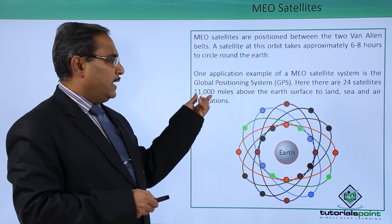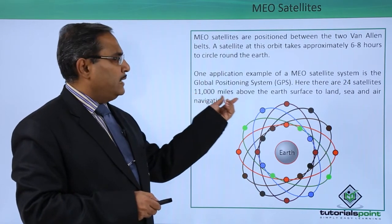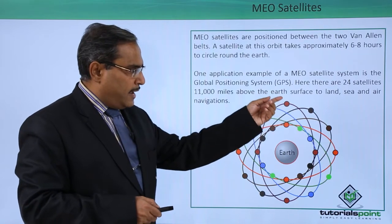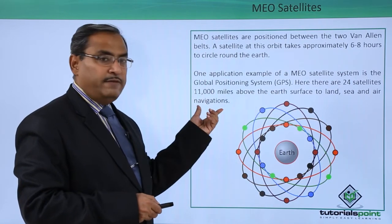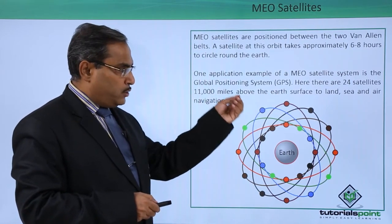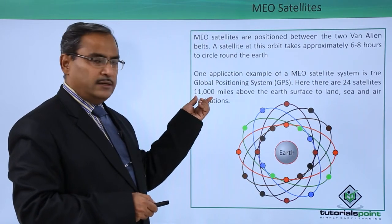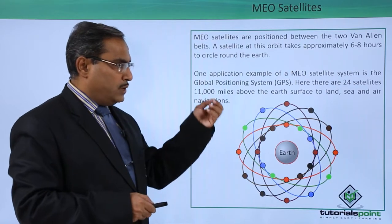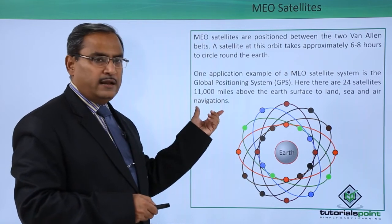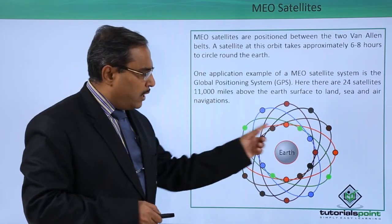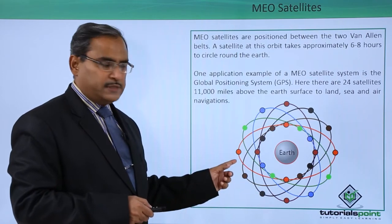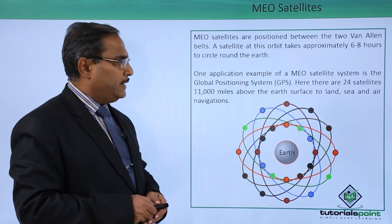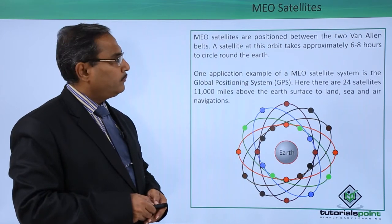There are 24 satellites positioned 11,000 miles above the earth surface for land, sea, and air navigation. If you count the respective satellites shown here, you will find 24 such satellites.